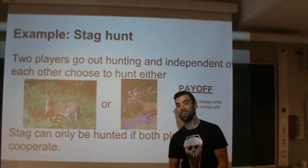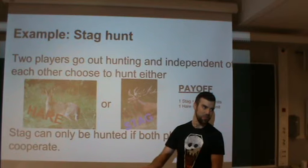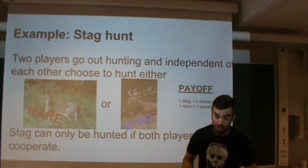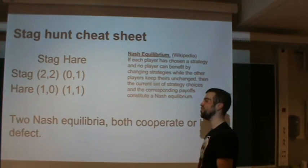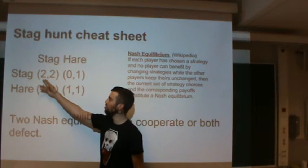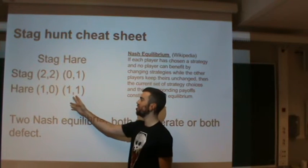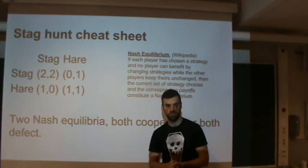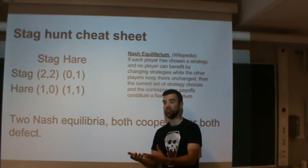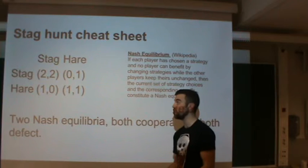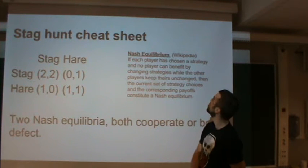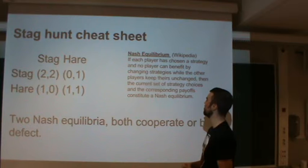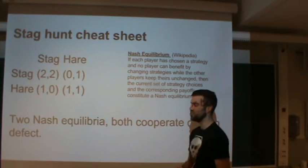We can analyze this just as we did the prisoner's dilemma, though there is an important difference. The payoff matrix shows cooperation (stag-stag), defection (hare-hare), and the asymmetrical cases in between. In this system, we have two equilibria — what game theory calls Nash equilibria. The Nash equilibrium is defined as: if each player has chosen a strategy and no player can benefit by changing strategies while the other players keep theirs unchanged, then the current strategy choices and corresponding payoffs constitute a Nash equilibrium. In other words, if everyone else does the same, I cannot improve my own situation by switching.